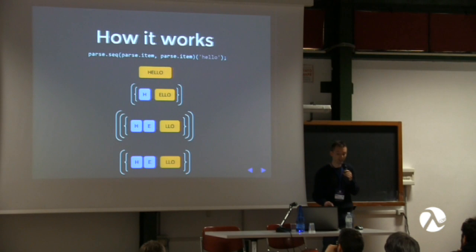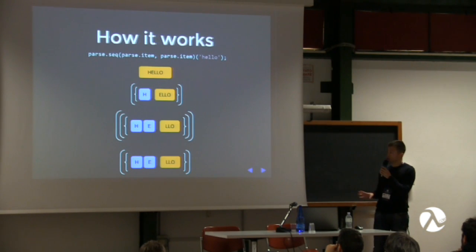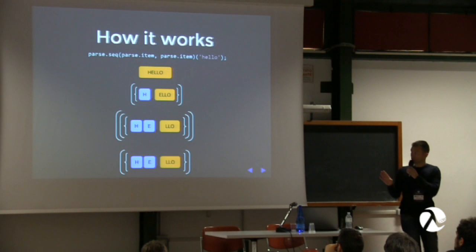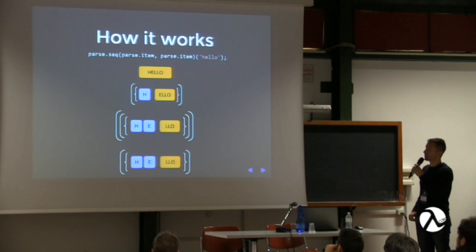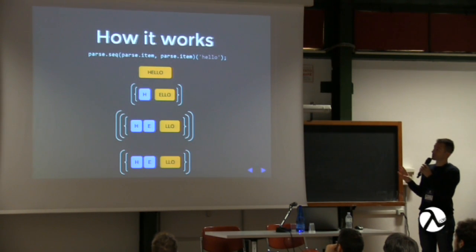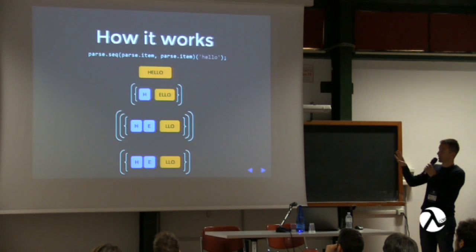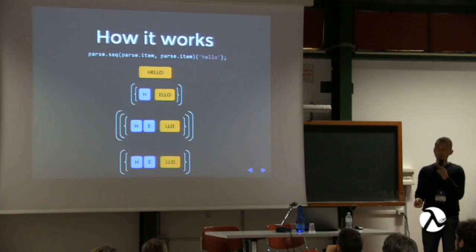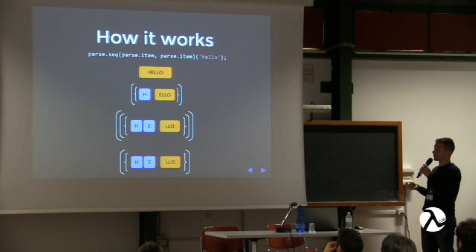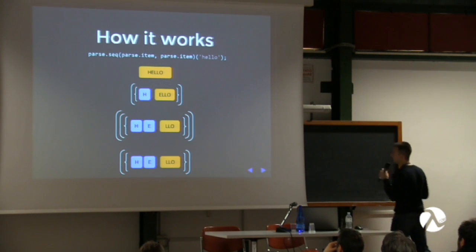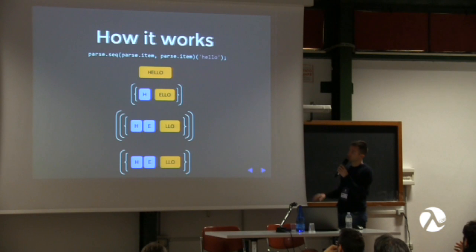To give a better idea, let's look at a visual representation. We start from the string 'hello' and give it to the seq combinator applied to two item parsers. After the first parser, we get the result 'h' with remainder 'ello'. After the second parser, we get another array of results. We then call concat, which flattens the result — and that's the final output, exactly what we expect from sequencing two parsers.